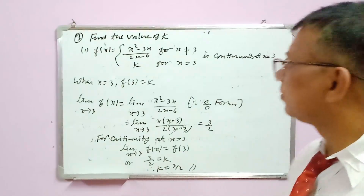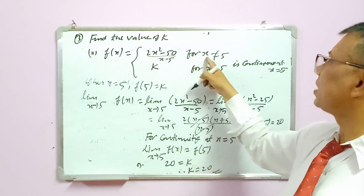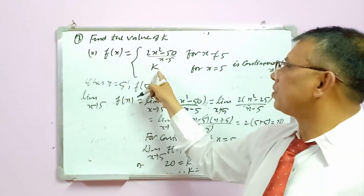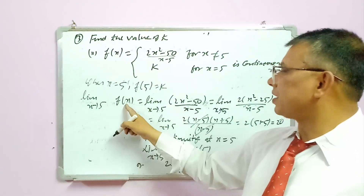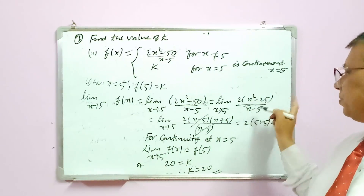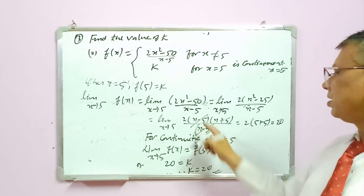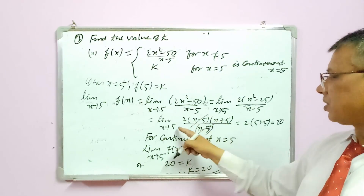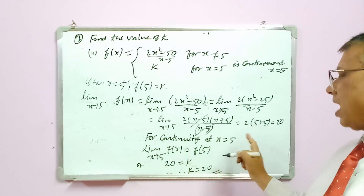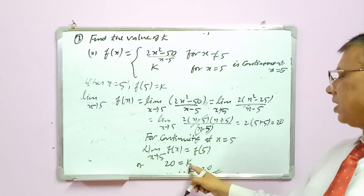Second question: f(x) = (2x² - 50)/(x - 5) for x ≠ 5, and f(5) = k, is continuous at x = 5. When x = 5, f(5) = k. Limit as x tends to 5: taking 2 common gives 2(x² - 25)/(x - 5) = 2(x - 5)(x + 5)/(x - 5). Cancel (x - 5), leaving 2(x + 5). Substituting x = 5: 2(5 + 5) = 2(10) = 20. For continuity, the limit equals f(5), so k = 20.